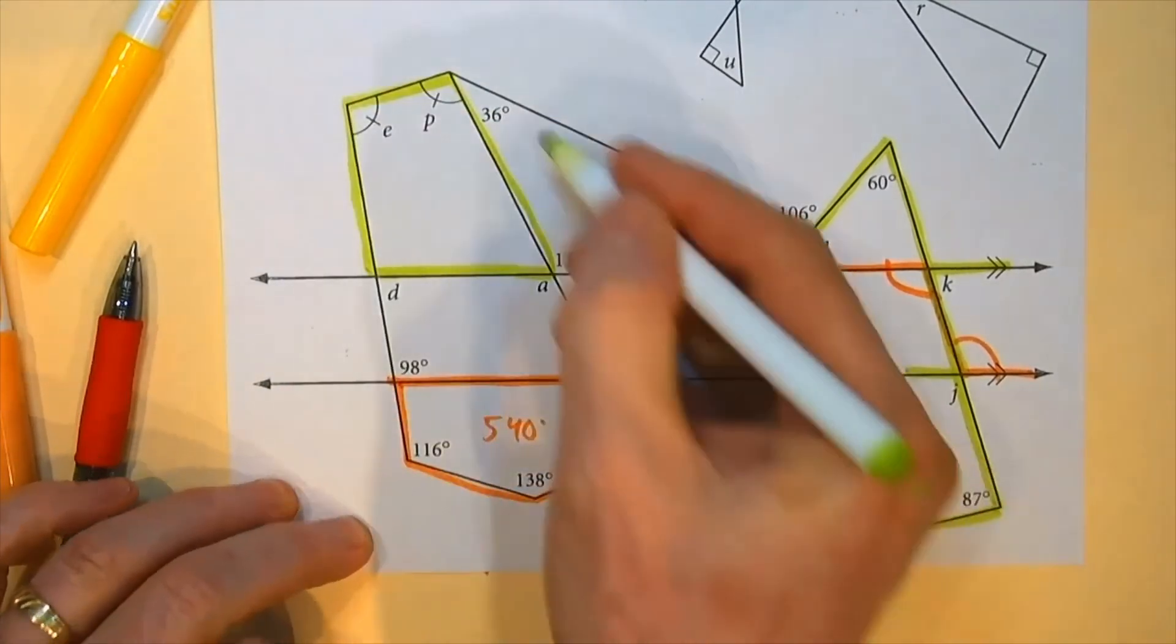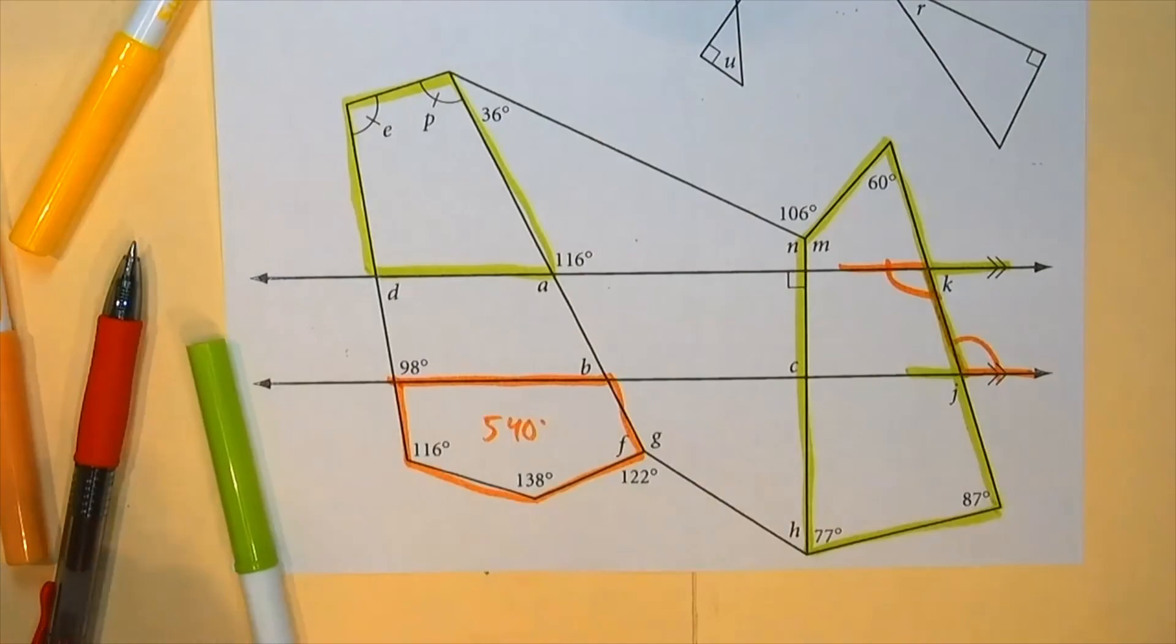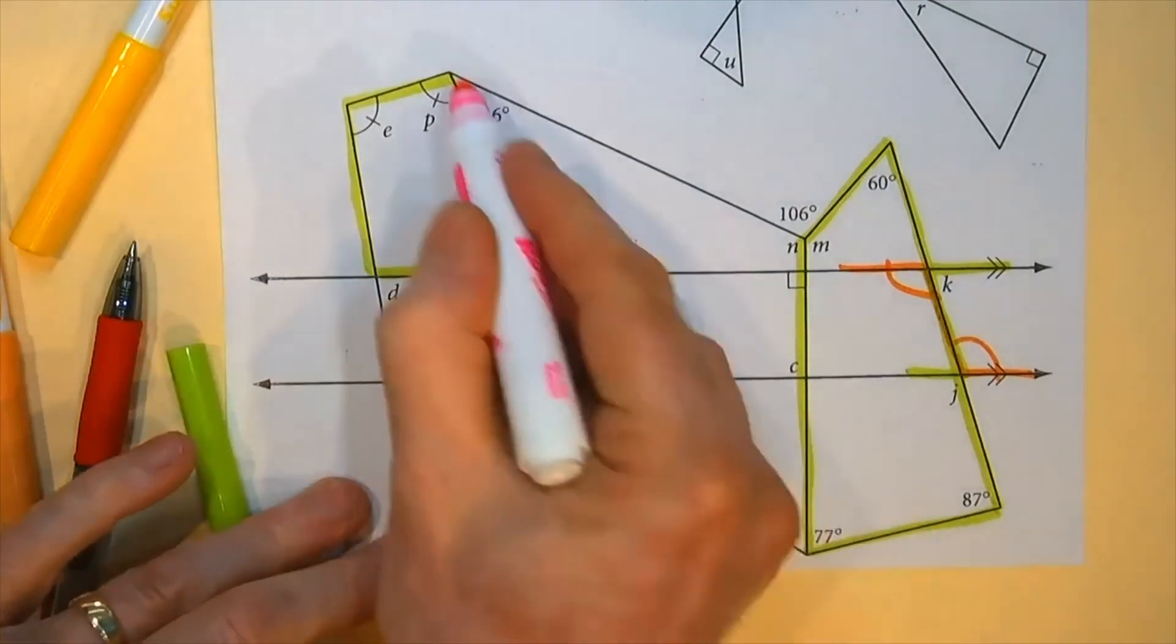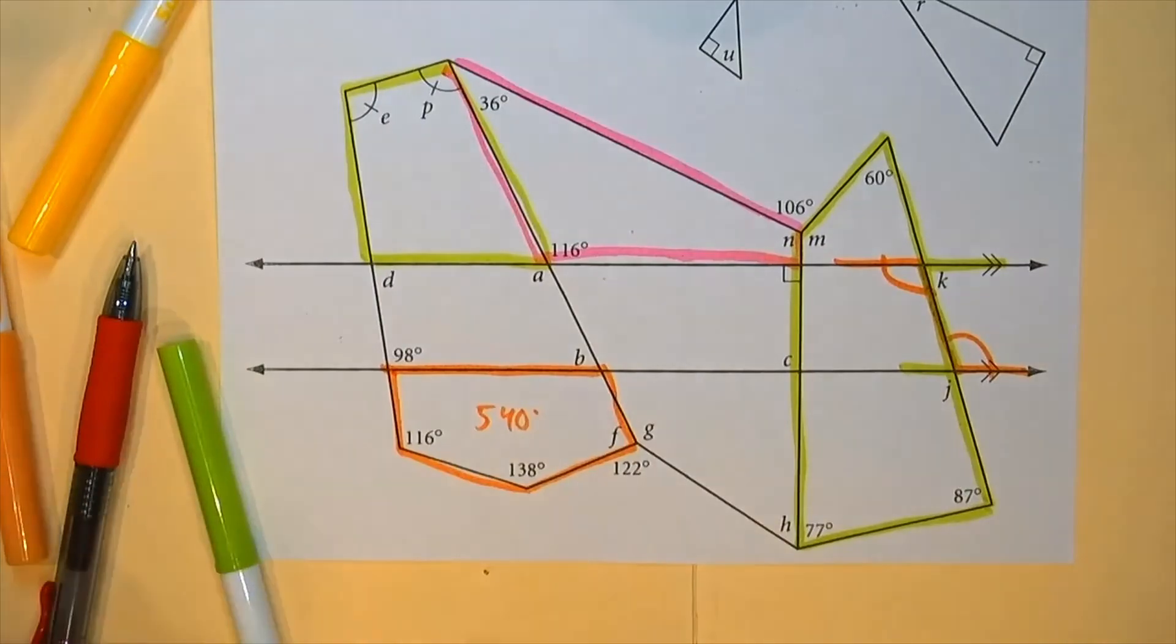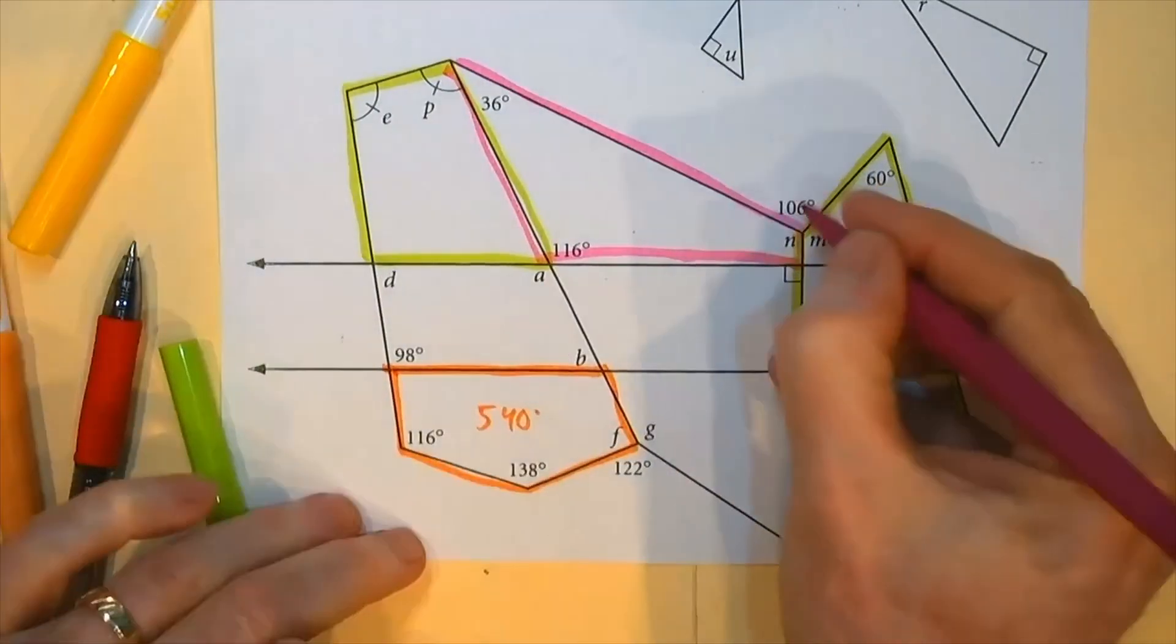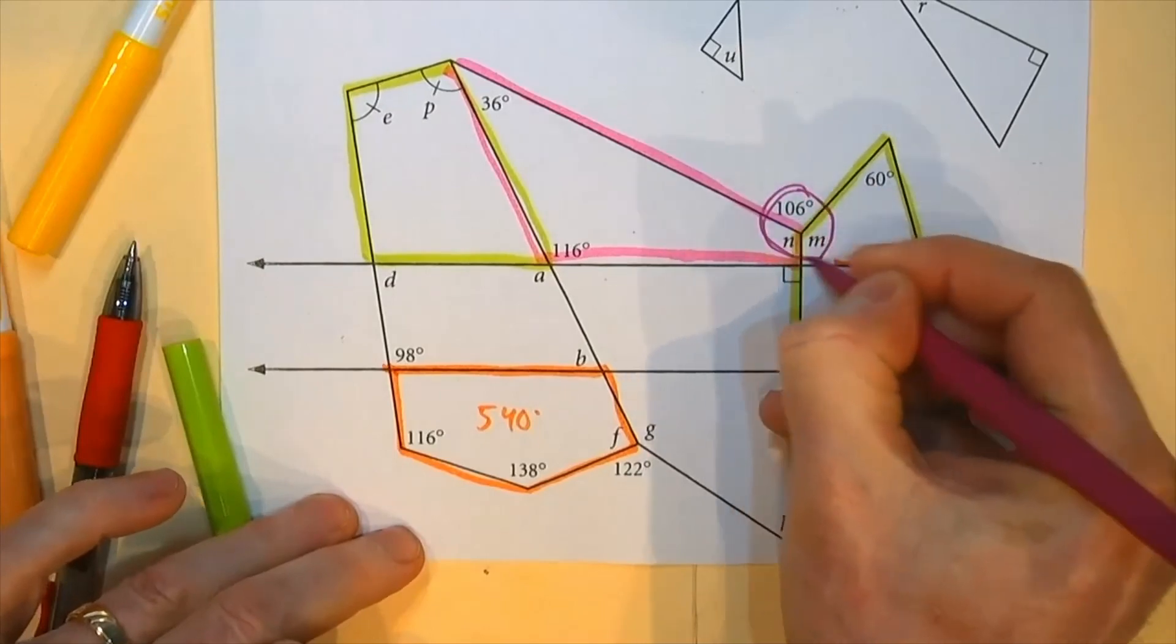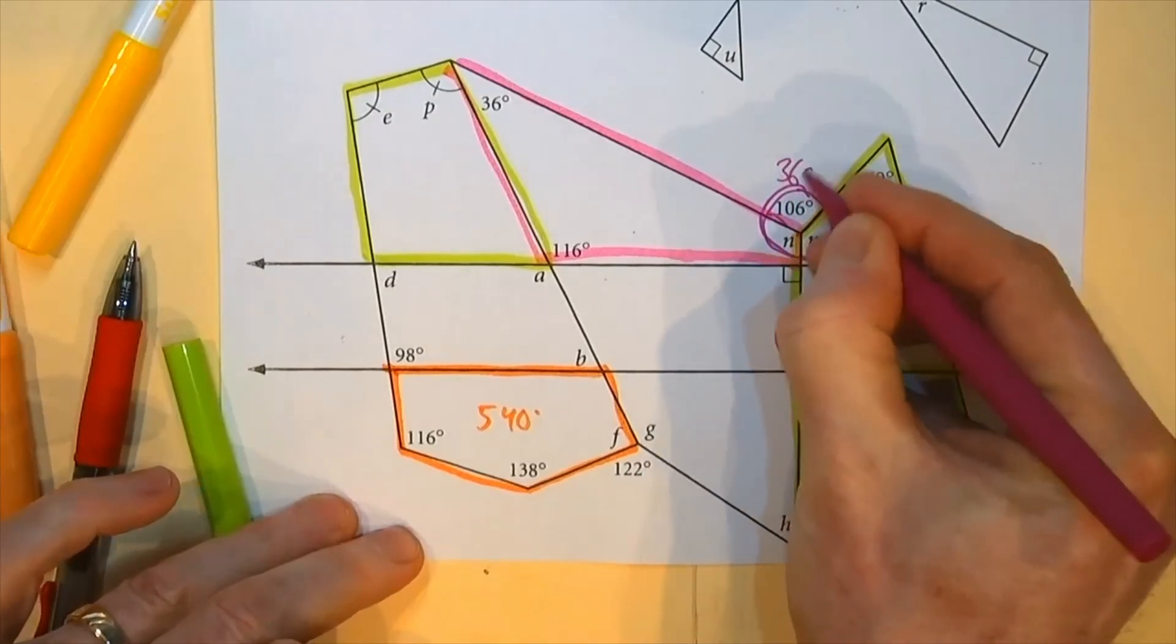Or I could even extend it all the way down. So whatever you see, lots of quadrilaterals here. Here's another quadrilateral. And one last thing I noticed, even in writing there. Hey, what about these three? That makes a full 360, doesn't it?